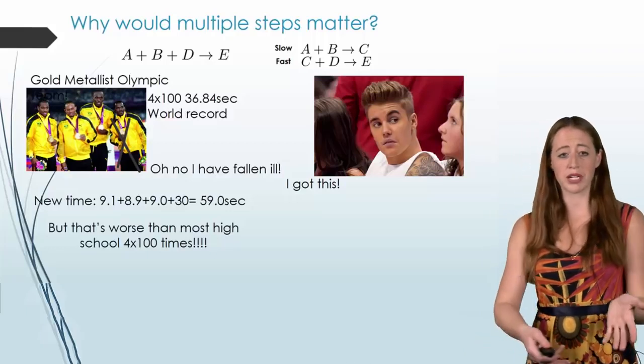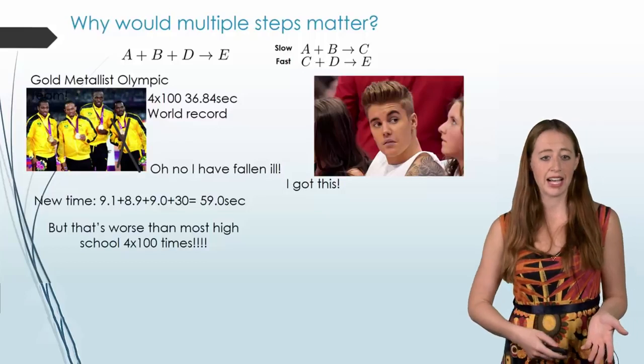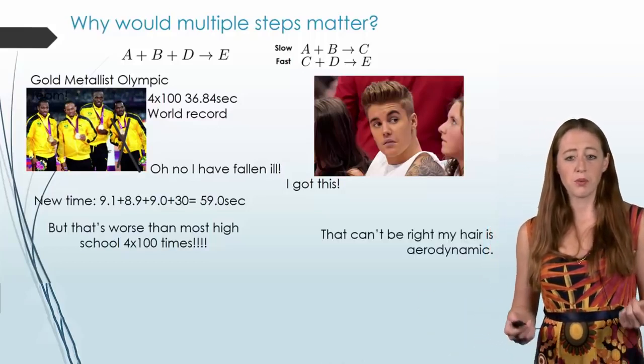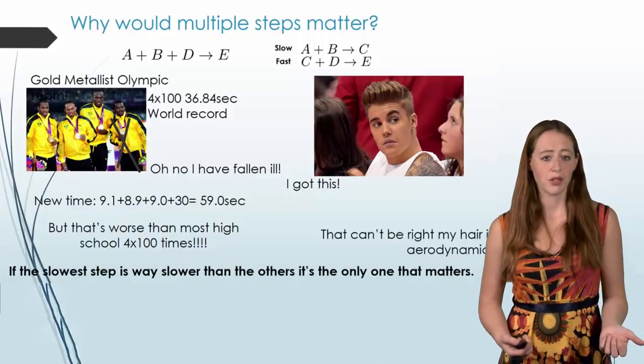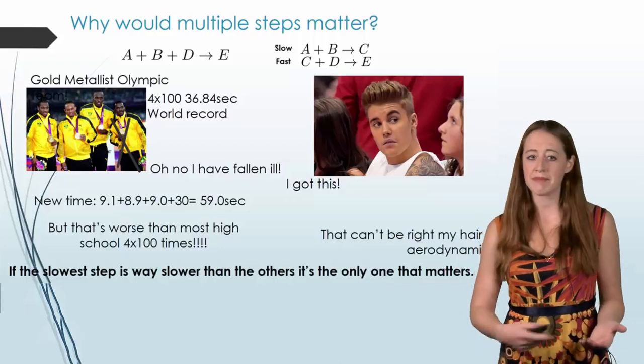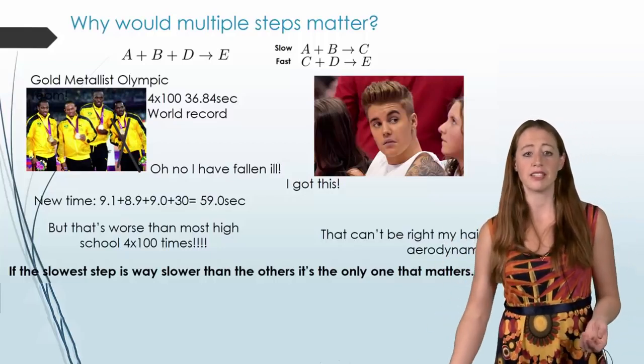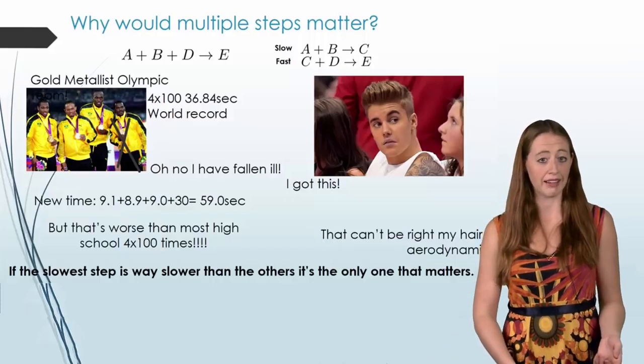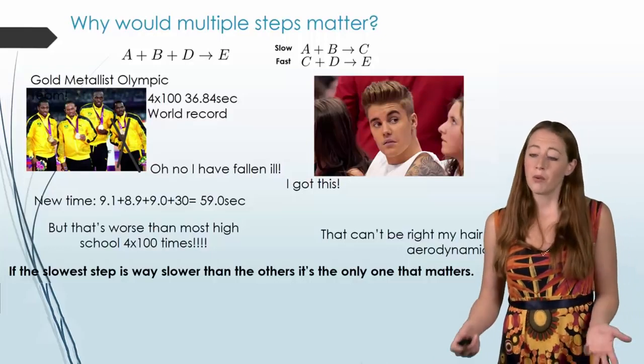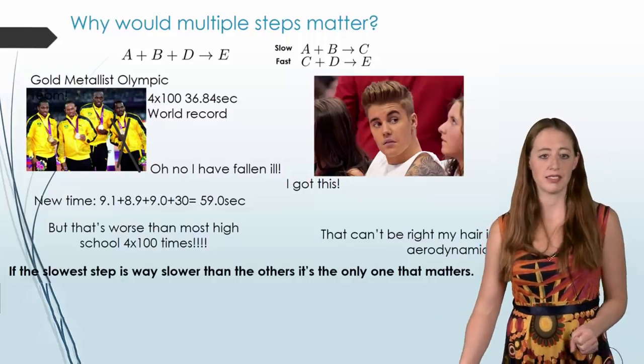So we took a world record holding team, and we put in just one switch, one slow person, and now we're worse than high school teams. So why is this? Well, the slowest step is always going to be what we call rate limiting. It doesn't matter how fast the other ones are if our really, really slow step holds everything back. Now you might say, well, what's slow and what's fast? Give me a number here. Well, we can't really do that because it just depends.